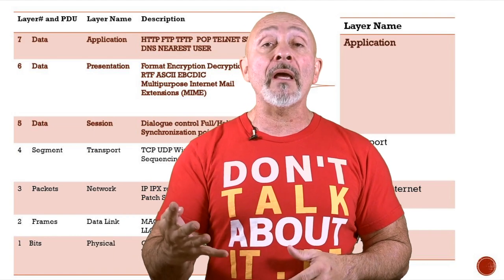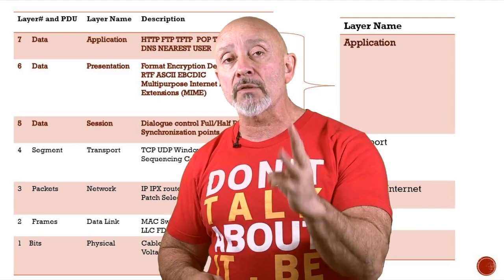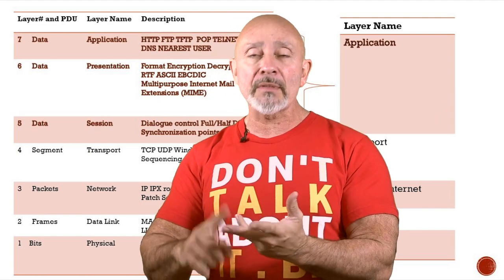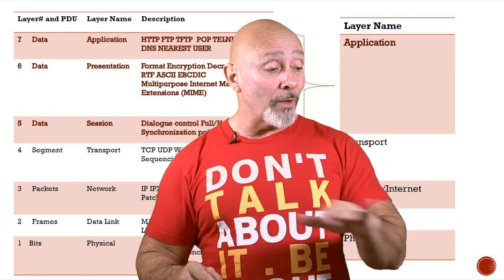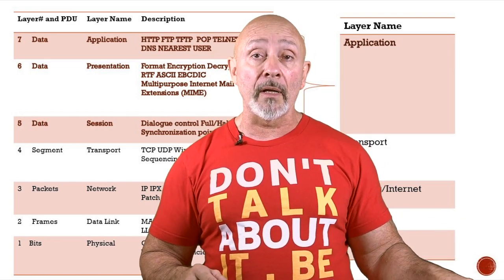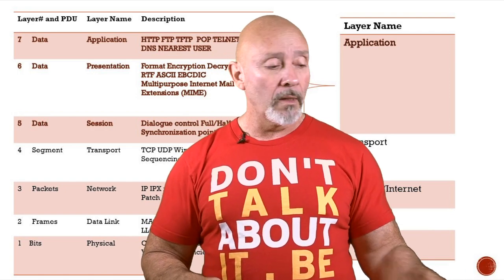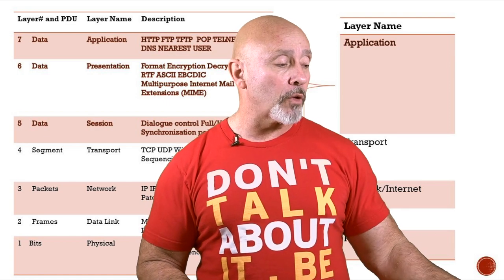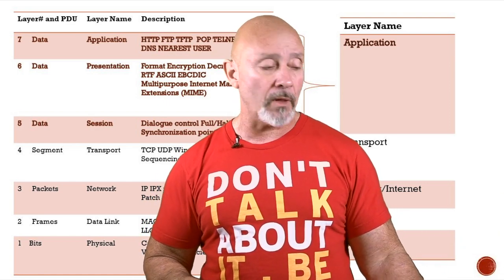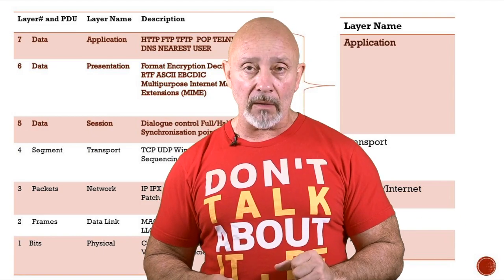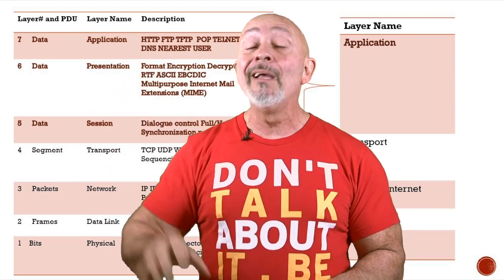If you look at the Application layer, it maps directly to the three upper layers of the OSI: Application, Presentation, and Session. The Transport layer maps directly to the Transport layer of the OSI. The Network layer maps to the Network layer, and the Data Link and Physical map over to Data Link and Physical of the OSI model as well.